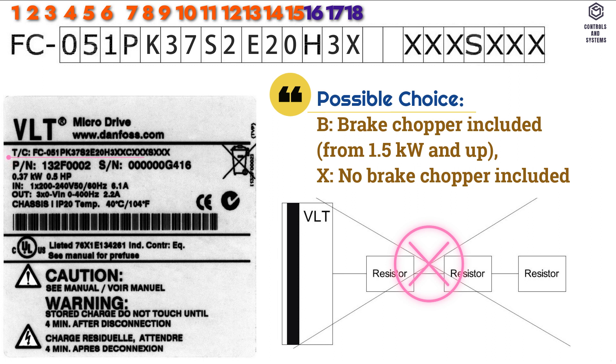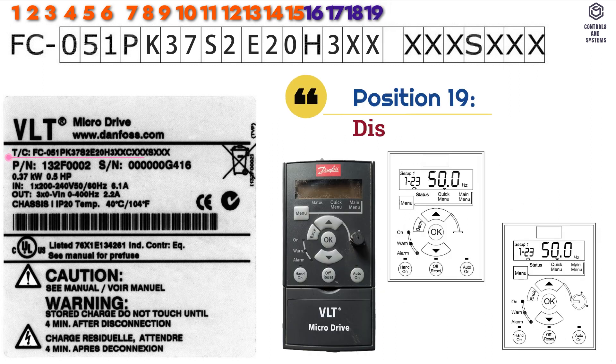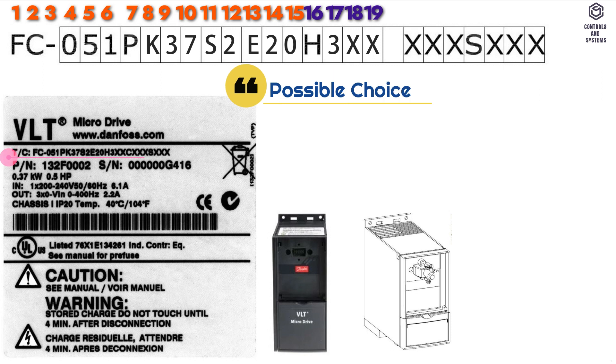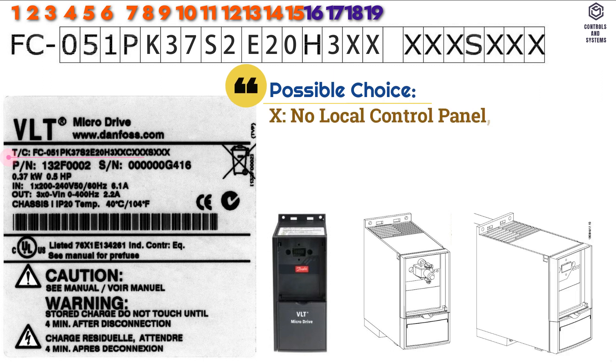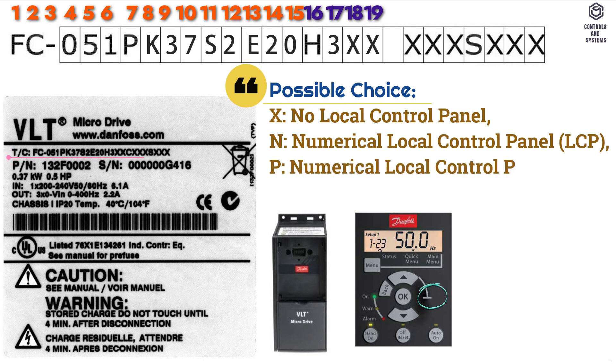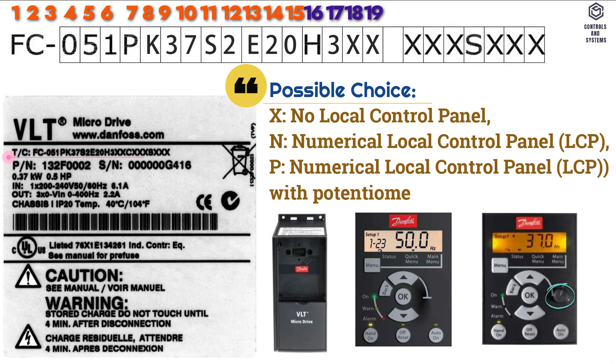Position 19 is display, possible choice is X that means no local control panel, ON that means numerical local control panel, P that means numerical local control panel with potentiometer.